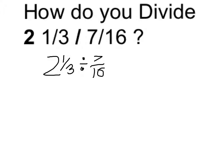Before we proceed with the division algorithm, let's think about what this will be approximately. So 2⅓ is obviously a little bigger than 2. Now 7/16 — that's a little bit less than 1½.